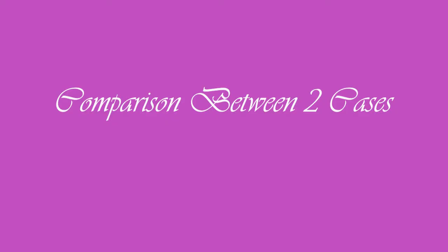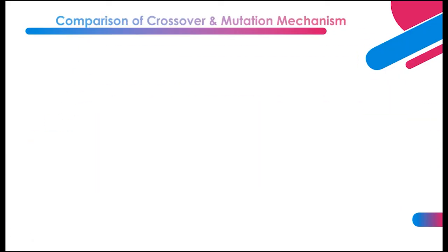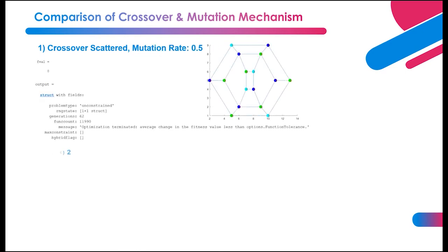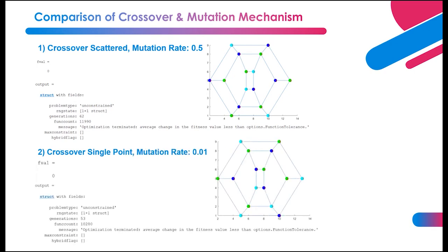In this section, two cases are used to compare different crossover and mutation mechanisms. The first case uses crossover scattered operator and mutation uniform operator with 0.5 mutation rate, while the second case uses crossover single point operator and mutation uniform operator with 0.01 mutation rate.